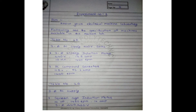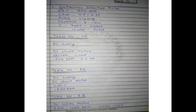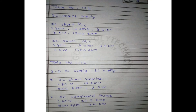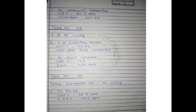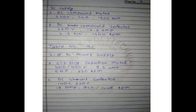The following are the specifications of machines available in the machine lab. You can write these specifications number-wise: 3-phase AC supply 440V 50Hz, 3-phase squirrel cage induction motor, 3-phase slip ring induction motor, DC compound generator, synchronous induction motor, and DC supply.